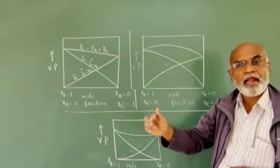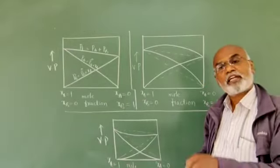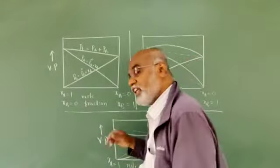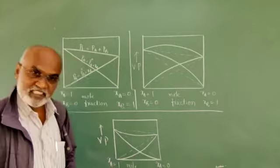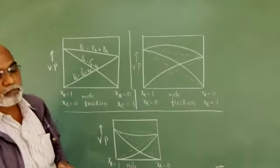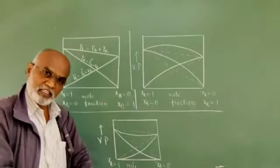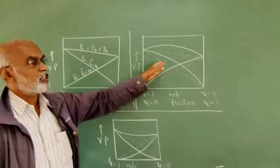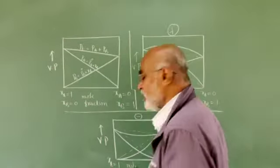In case of a non-ideal solution which shows positive deviation from Raoult's Law, the vapor pressure is more and the boiling point is less — the mixture boils at a relatively low temperature when compared to either of the pure components. Whereas in case of a non-ideal solution which shows negative deviation from Raoult's Law, the observed vapor pressure is less, and as a result the mixture boils at a relatively higher temperature when compared to the boiling points of either of the pure components.